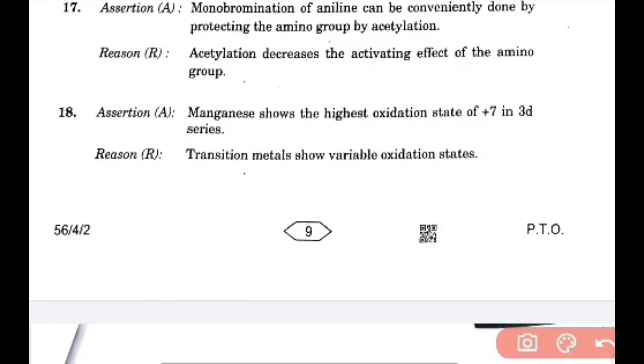In the last MCQ: Manganese shows the highest oxidation state of +7 in 3D series. The transition metals show variable oxidation states. So option B is the right answer.